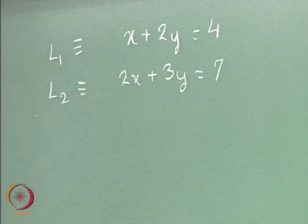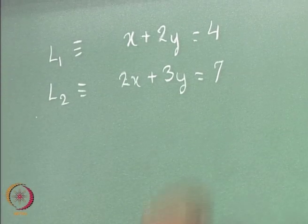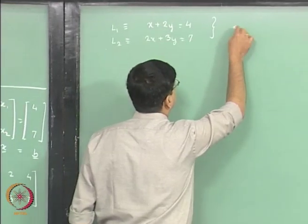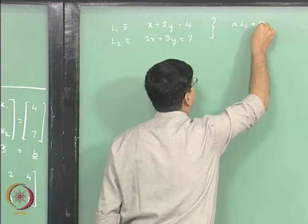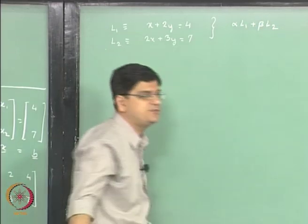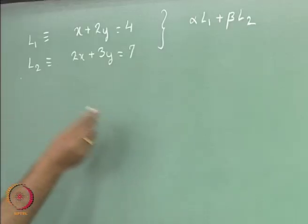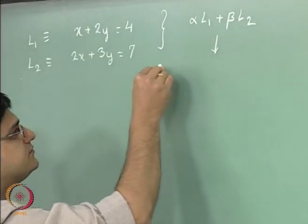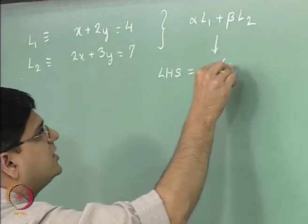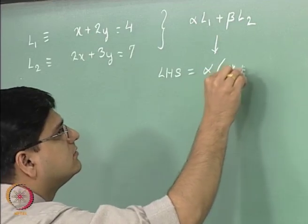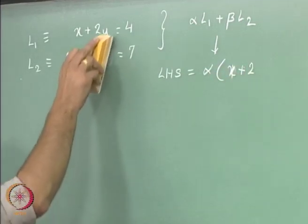So let us take a linear combination of the line L1 with line L2. And the linear combination basically means that we are going to take alpha L1 plus beta L2 where alpha and beta are two scalars. So let us look at the left hand side of this equation.